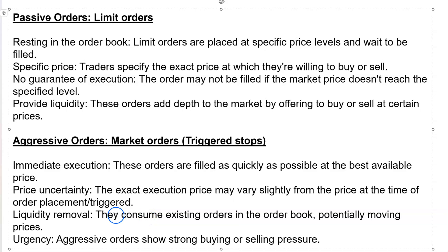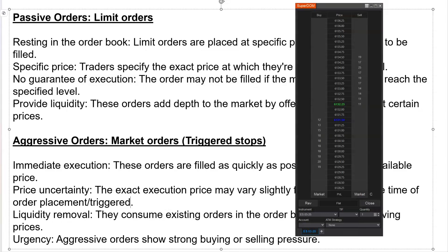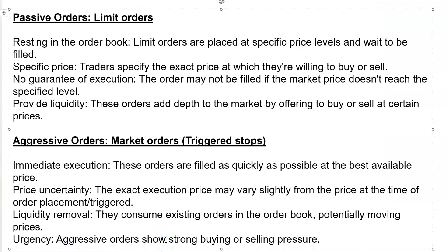Market orders, which are aggressive orders, consume existing orders in the order book — they move price but they are removing liquidity from the market. If someone offers 11 at 32.25 and someone buys the 11, they've just removed that liquidity. That's what a liquidity provider does — that's what a market maker does: he provides bids and offers. It's the aggressive traders removing liquidity. Aggressive orders reflect strong buying or selling pressure and cause imbalances in the market.